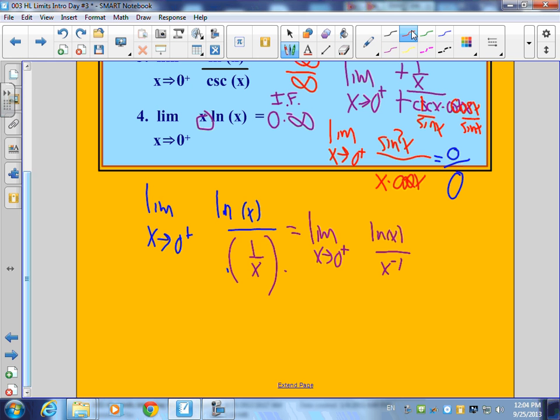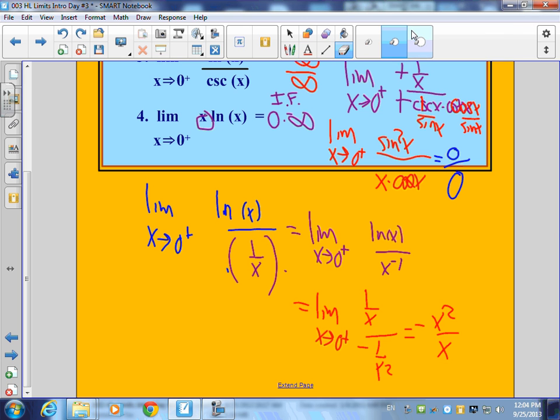The derivative of this is 1 over x. The derivative of this is negative 1 over x squared. This turns into negative x squared over x. And what simplifies out? So it's just going to be negative x. Put a 0 in. This is equal to 0. So this has a 0 limit. Not very pleasing because 0 times infinity is 0. But that's how that one worked.